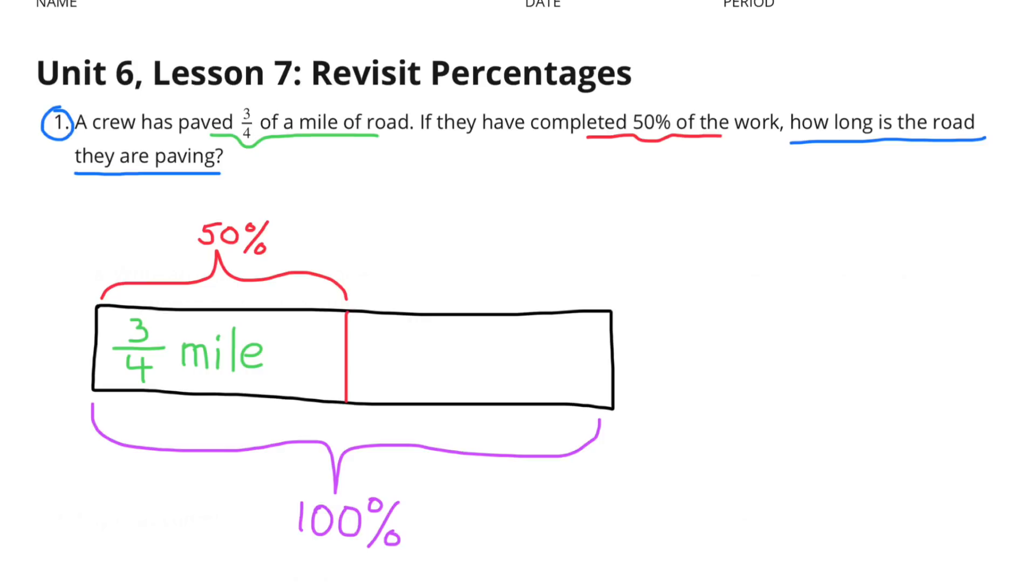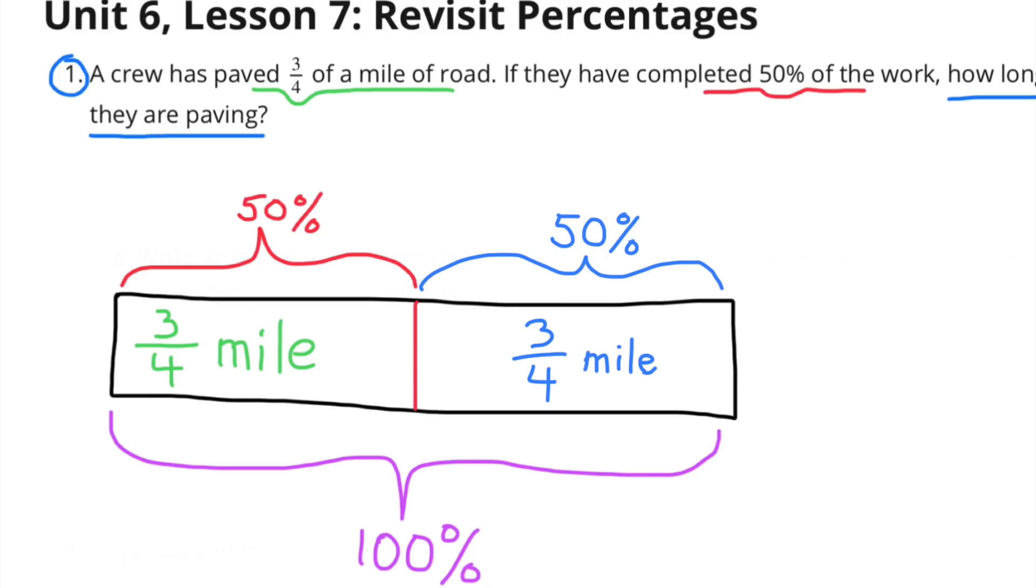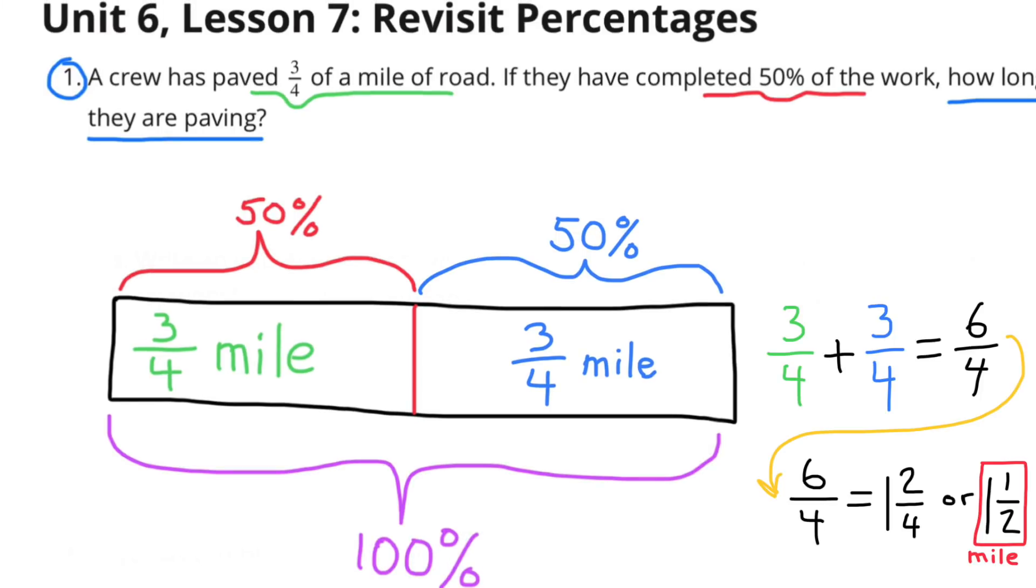In this diagram, I have 100% of the road represented. I've cut that in half to represent 50%, and inside that 50%, I have 3 fourths of a mile. Since they've paved 3 fourths of the mile and completed 50% of the work, for 100% of the work, I'd simply double the 50%, or double 3 fourths of a mile. And 3 fourths plus 3 fourths is 1 and a half miles.